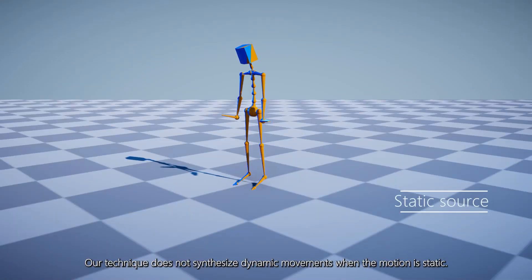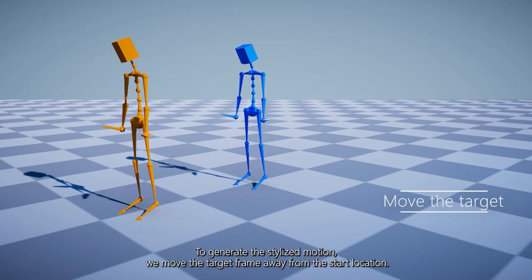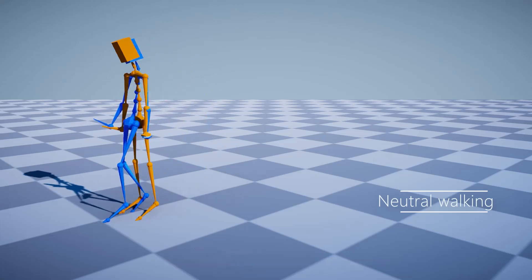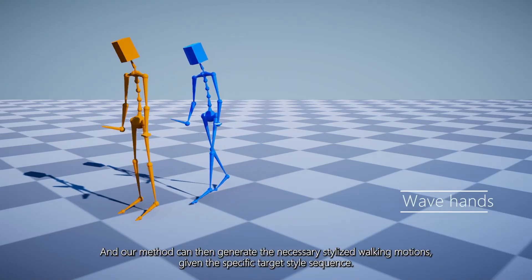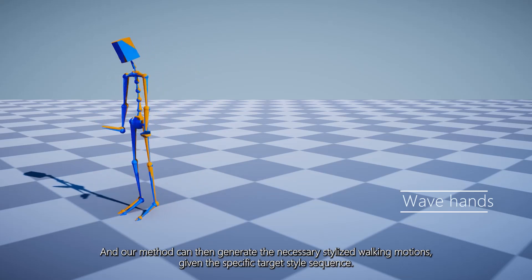Our technique does not synthesize dynamic movements when the motion is static. To generate the stylized motion, we move the target frame away from the start location. And our method can then generate the necessary stylized walking motions, given the specific target style sequence.